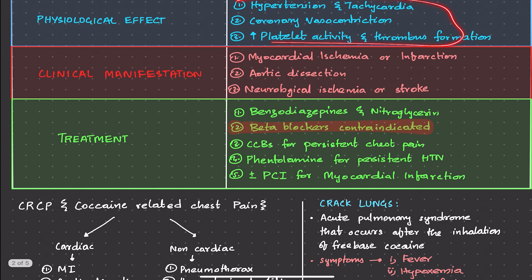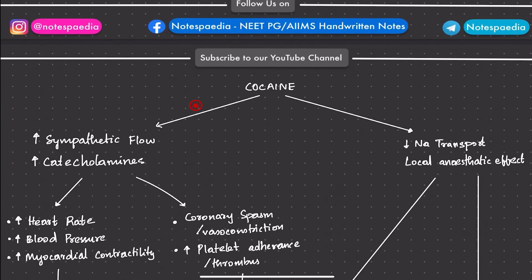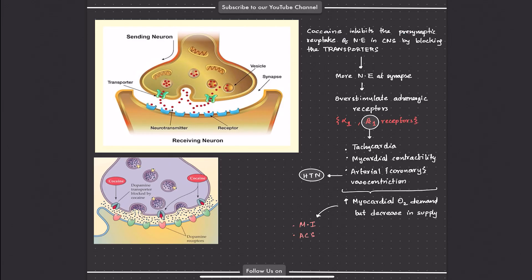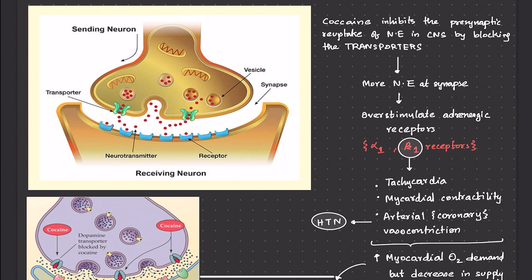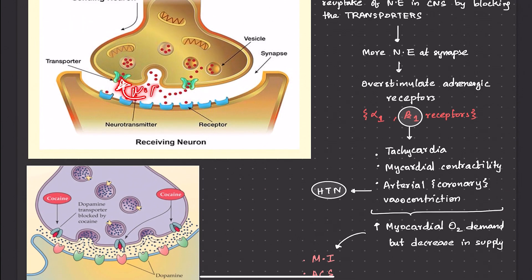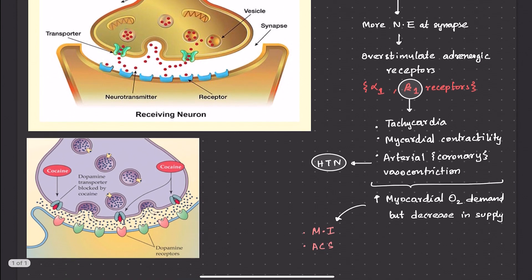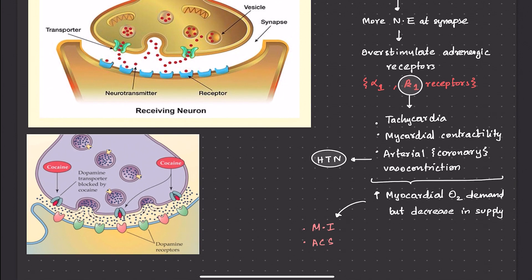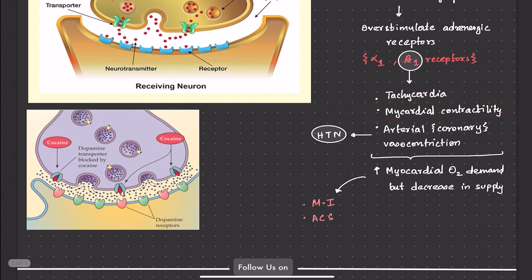Now let's look at how cocaine produces these physiological effects. Cocaine inhibits the pre-synaptic reuptake of norepinephrine in the central nervous system by blocking transporters — for example, the dopamine transporter is blocked — so there is no reuptake of norepinephrine. This results in markedly increased catecholamines, which stimulate adrenergic receptors. There is an increased sympathetic outflow that stimulates alpha-1 and beta-1 receptors, causing tachycardia, increased myocardial contractility, and coronary and arterial vasoconstriction, which leads to hypertension.